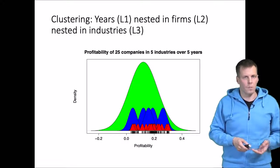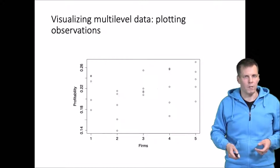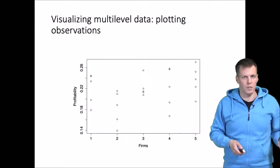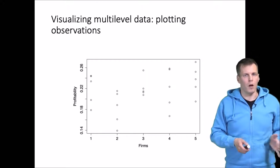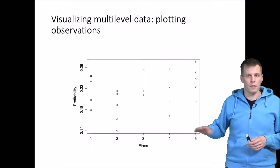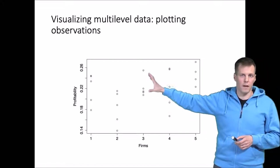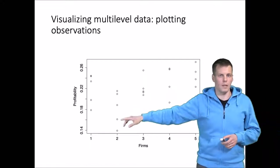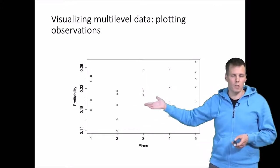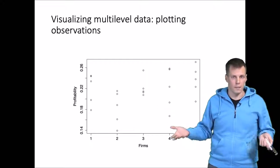If our dataset is small, we typically start with a graphical analysis. We can just upload the data — here we have 25 observations, five observations for each company across five companies within one industry. We can see some patterns: for example, this company shows very little variation in performance, and this company is less profitable than that company. This kind of analysis works well when you have a small set of observations.